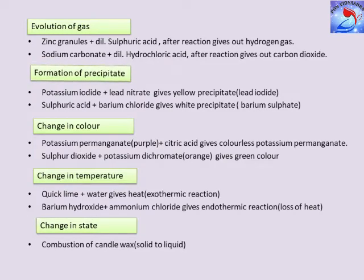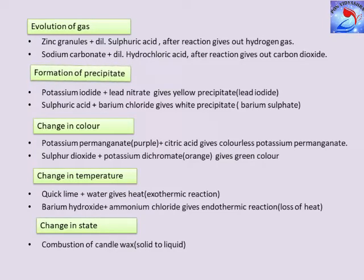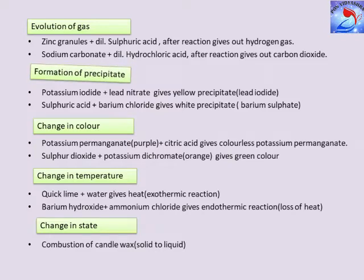Formation of a precipitate: when potassium iodide is added with lead nitrate, it gives a yellow precipitate of lead iodide. When sulfuric acid is added with barium chloride, it gives a white precipitate of barium sulfate. A precipitate is a solid product which separates out from the solution during a chemical reaction. A precipitate can be formed by mixing aqueous solutions of reactants when one of the products is insoluble in water.